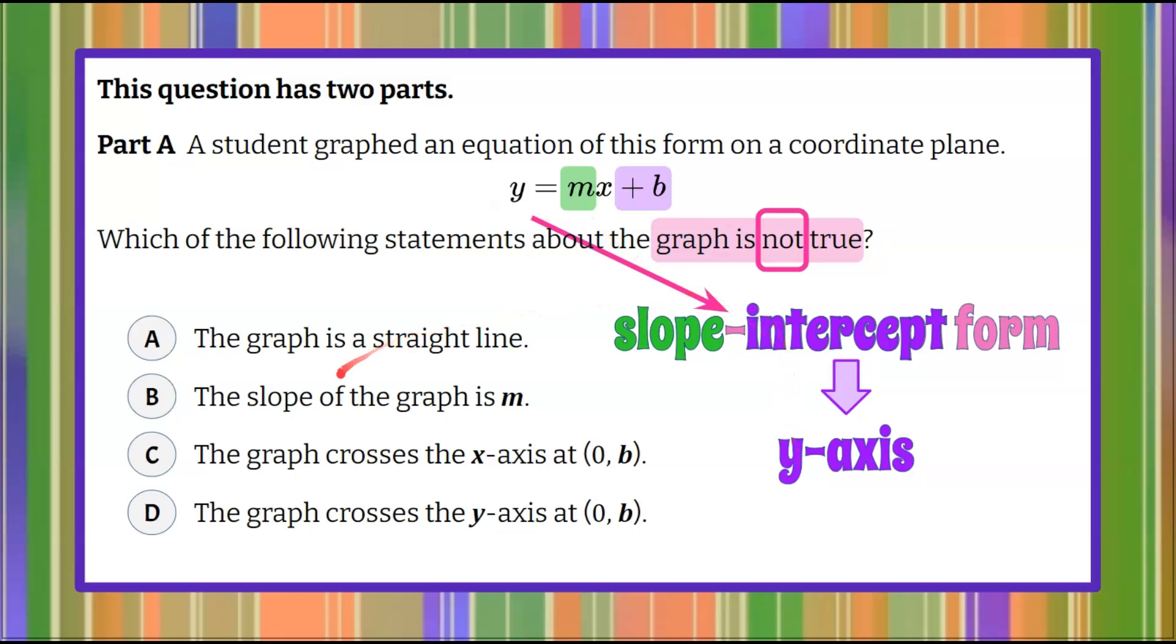So let's go to our answer choices. Choice A, the graph is a straight line. Well if it's in slope-intercept form that represents a line, so therefore check. But again we're looking for what is not true. So all graphs in this form are of a straight line.